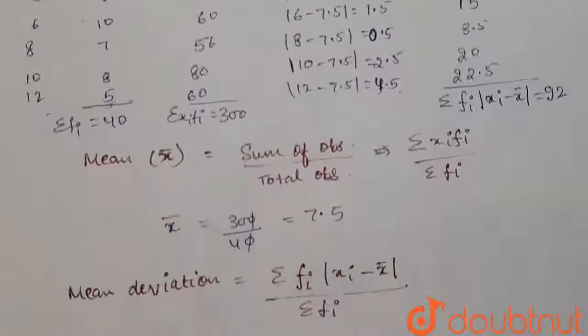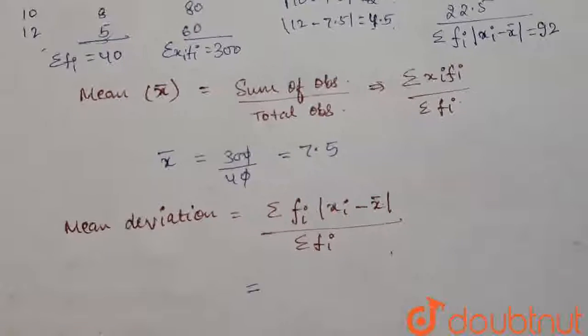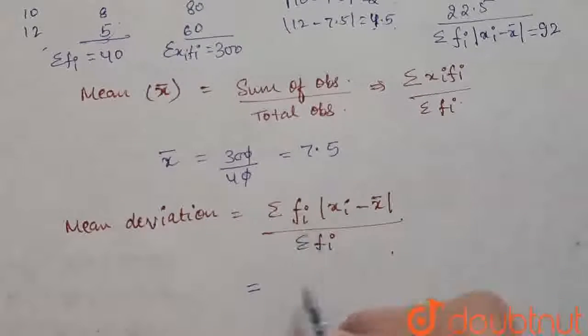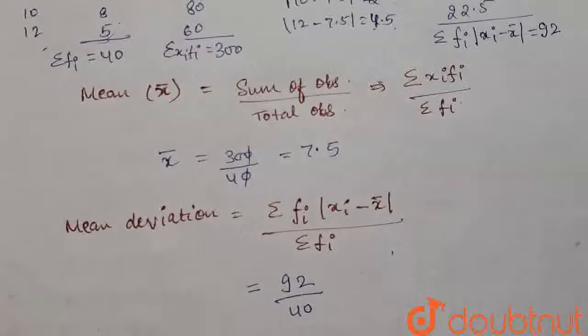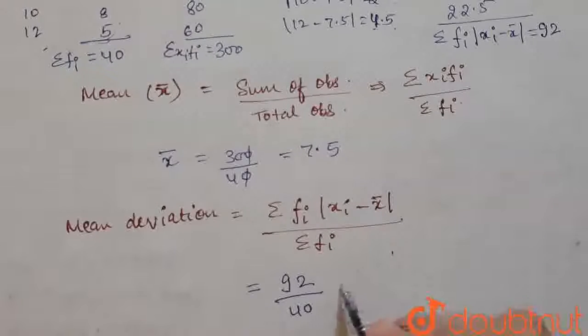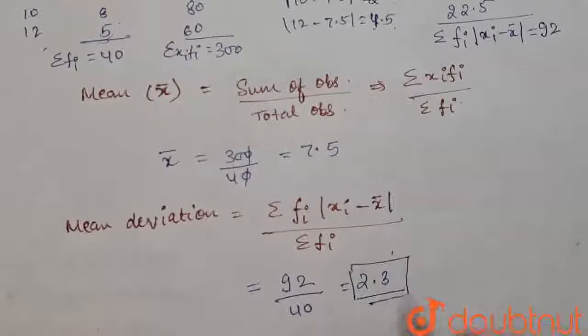Now, we will put the values in the formula. The formula for mean deviation is this. On putting the values, the value of this in this question is 92 divided by 40. The value of 92 divided by 40 is equal to 2.3. So, this is our answer.